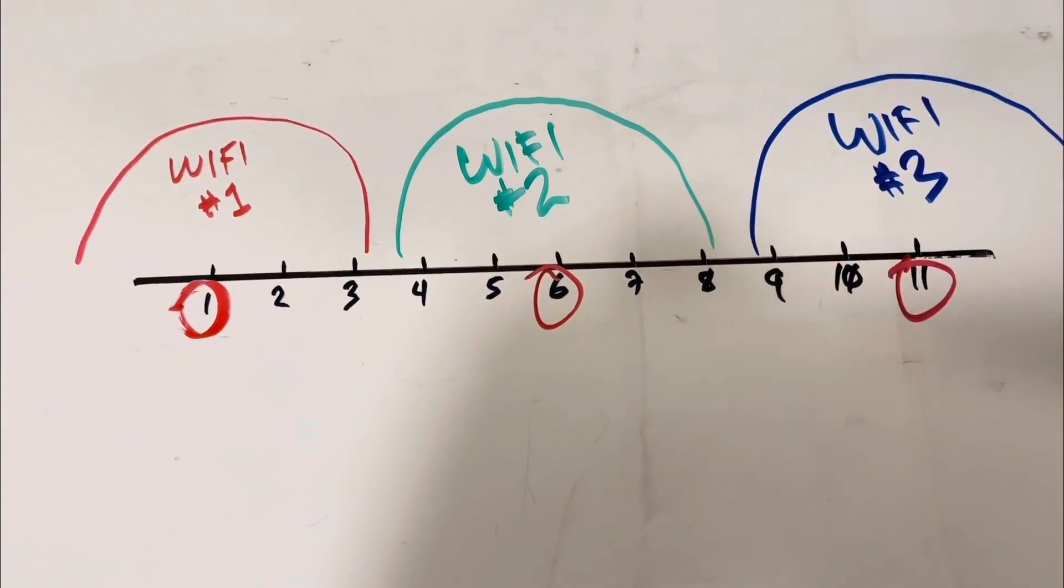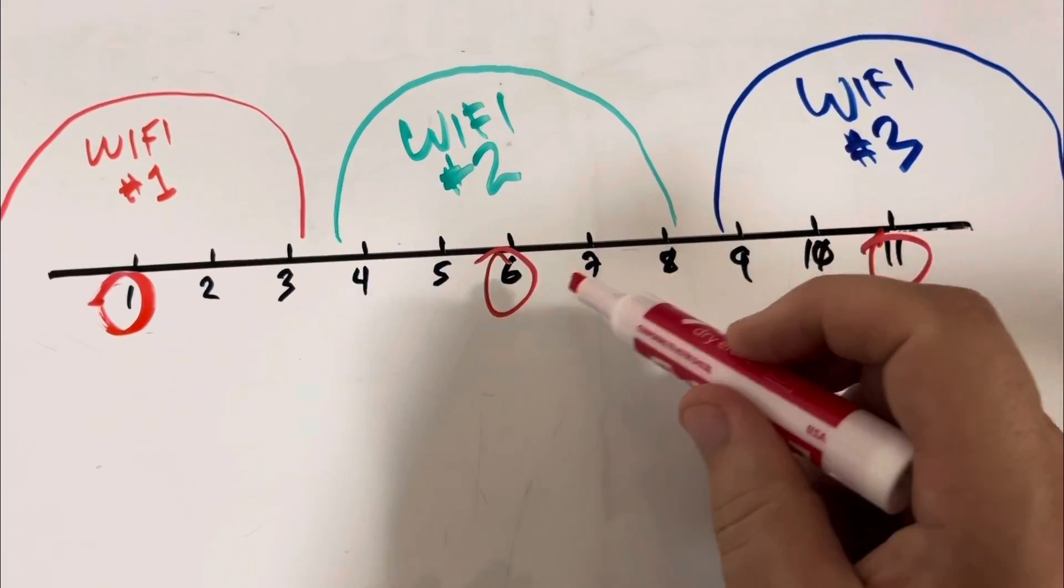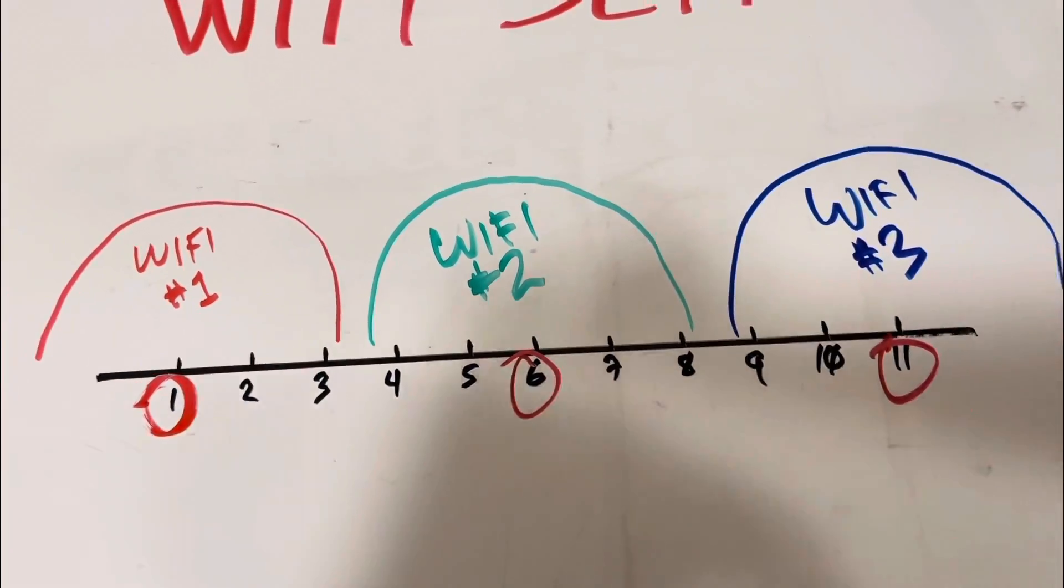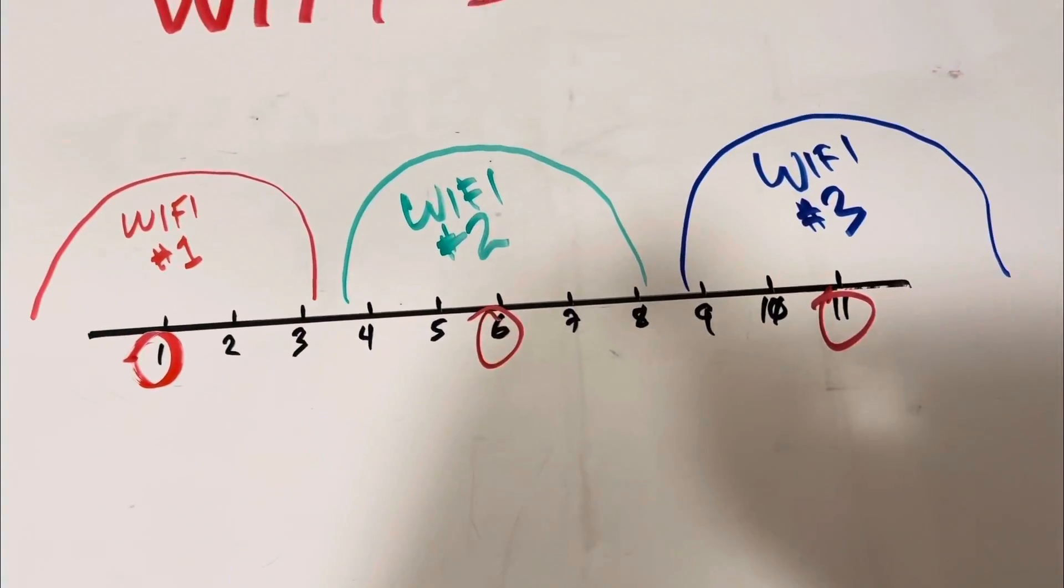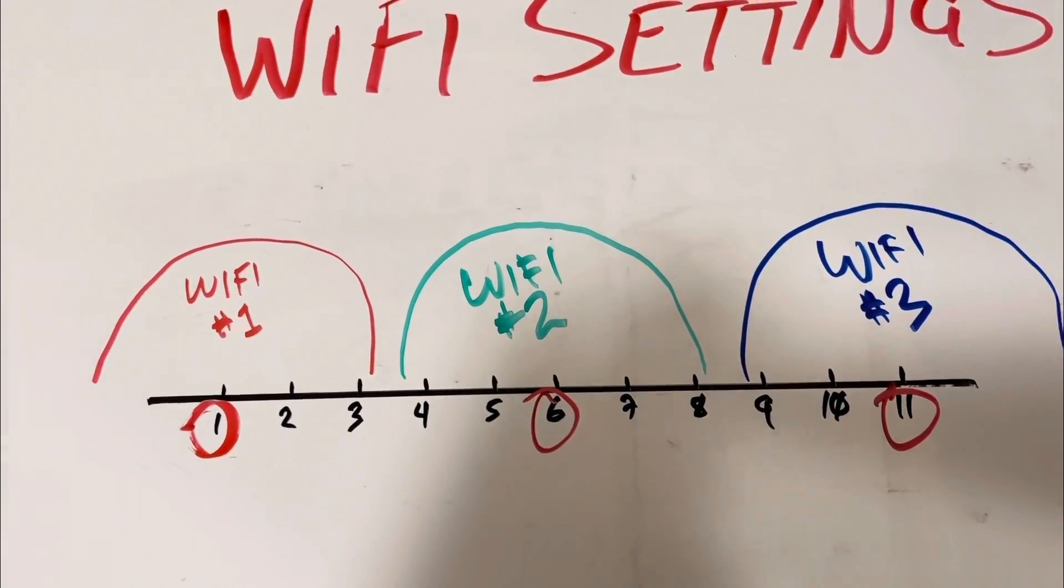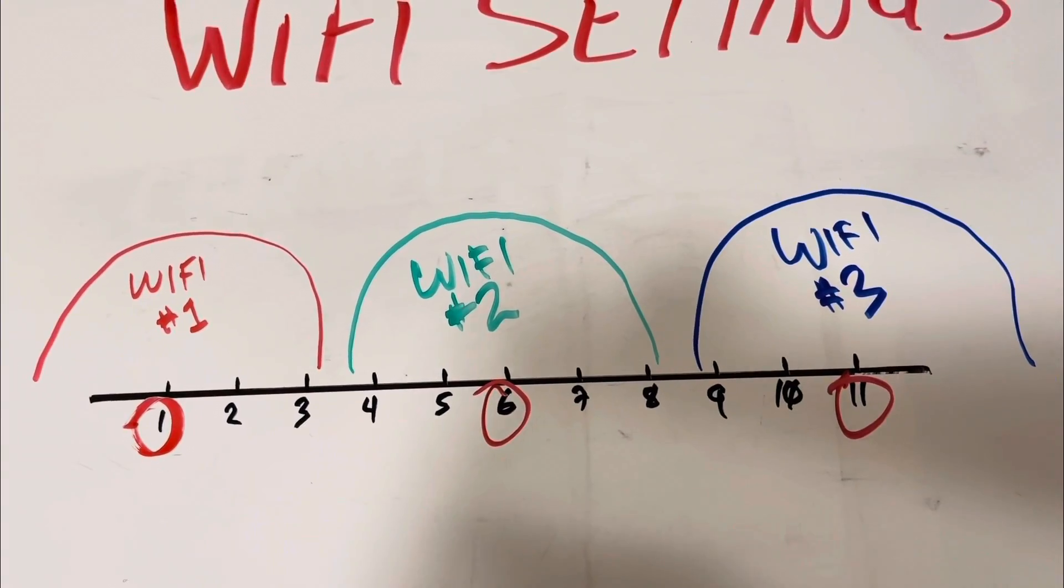Those are the channels we can use to prevent overlapping. If you were to choose something lower here or higher here, these two channels would overlap and that would cause interference with each other. So 1, 6, and 11 allow us three unique channels for three routers or three wireless networks to operate independently and without interference of each other.